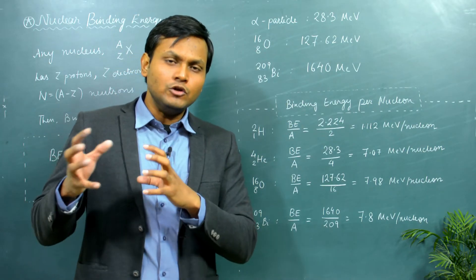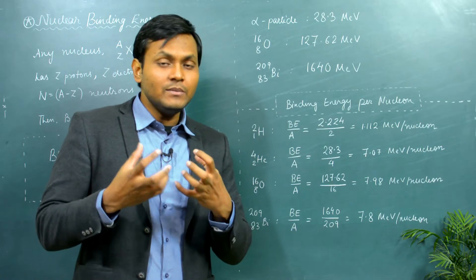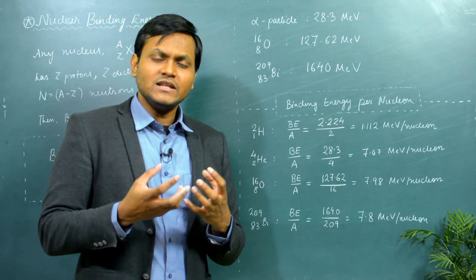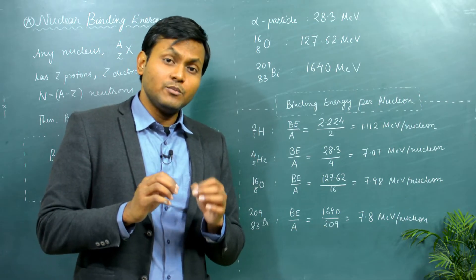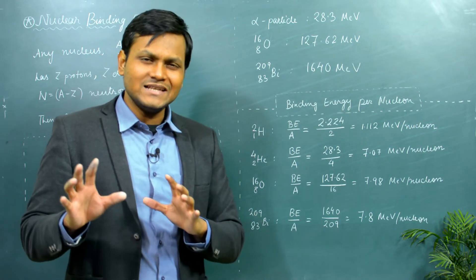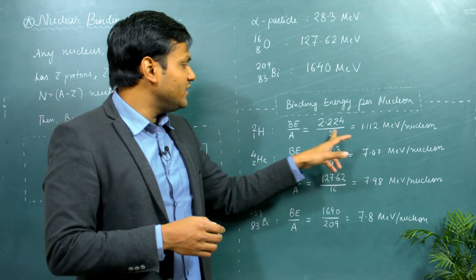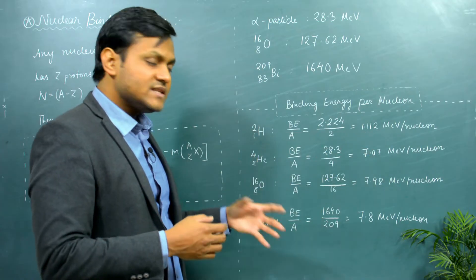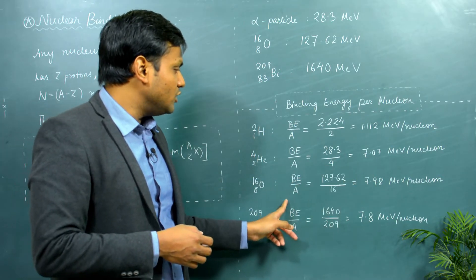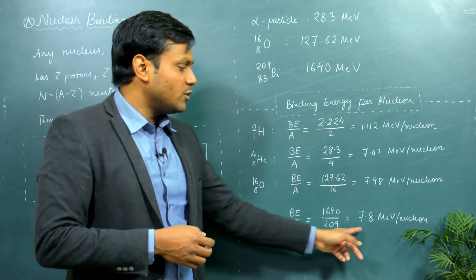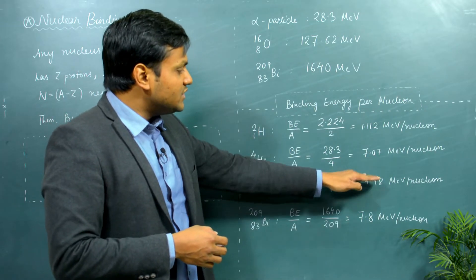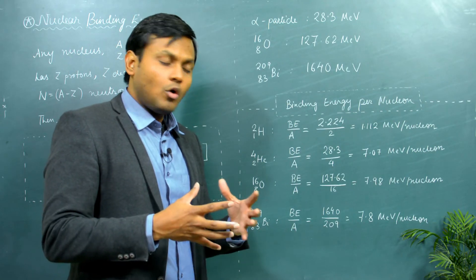To make a comparison between different kinds of nuclei and get an idea about their stability, we look at the binding energy per nucleon. The binding energy has an approximately proportional relationship with the mass number, so dividing the binding energy by the mass number gives a number that can be compared across different elements. For deuterium, the binding energy per nucleon is very small at 1.112 mega electron volts. For the alpha particle it is 7.07, for oxygen it is 7.98, and for bismuth it is 7.8 mega electron volts. The binding energy per nucleon is thus comparable across all these different elements.